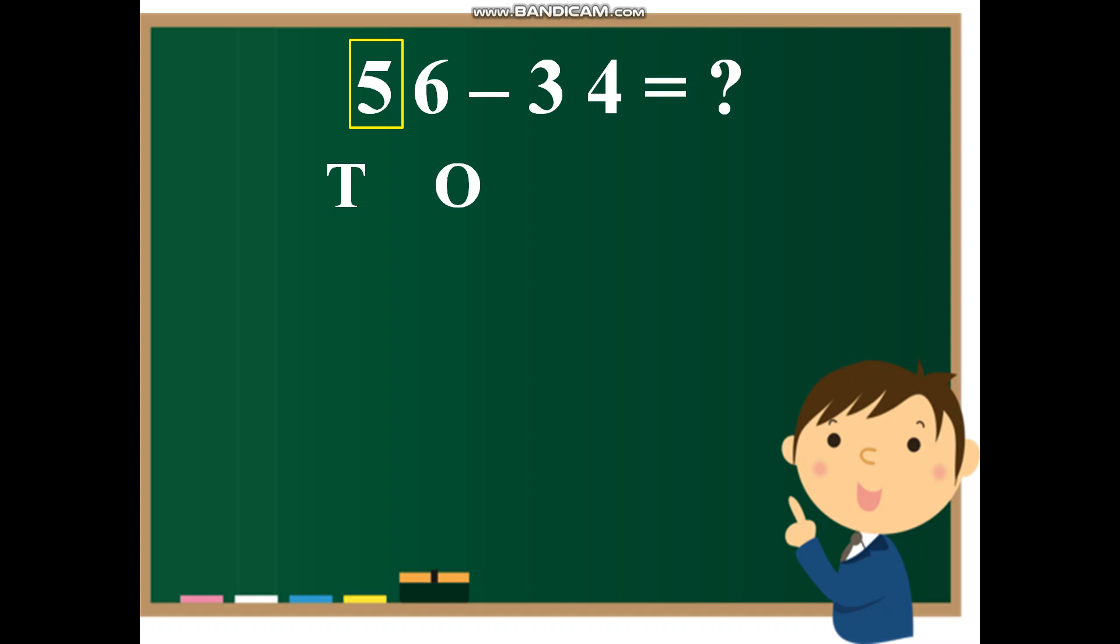Five, so five will go in the tens house. And six will go in the ones house. Because the expanded form of 56 is five tens and six ones.